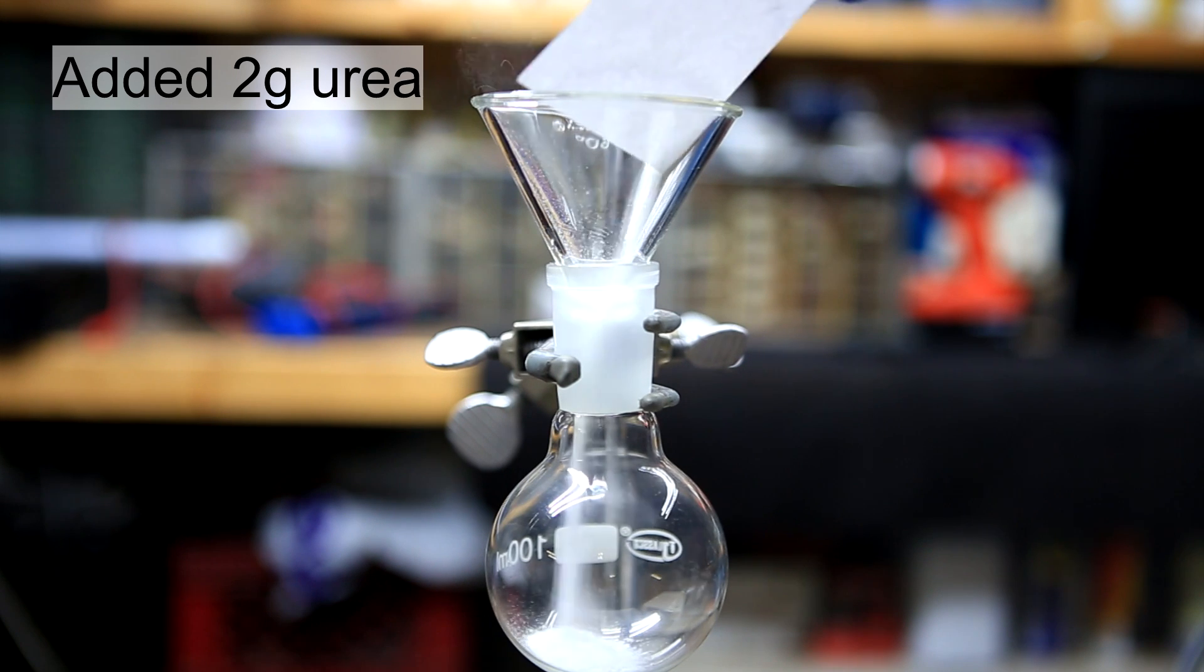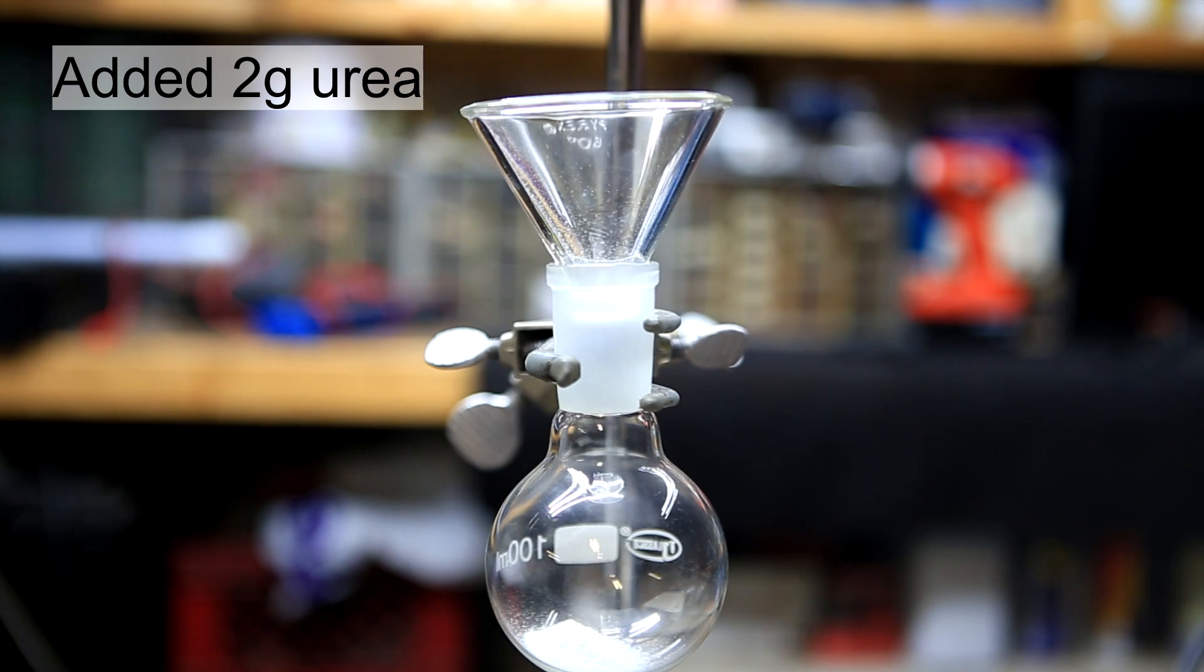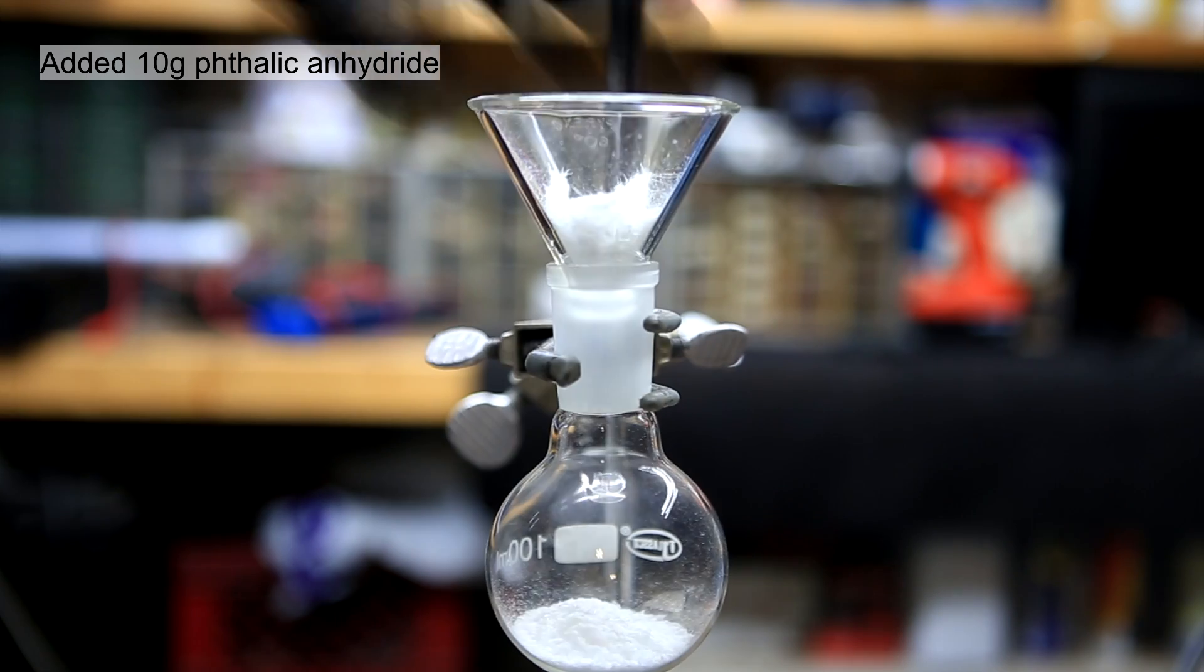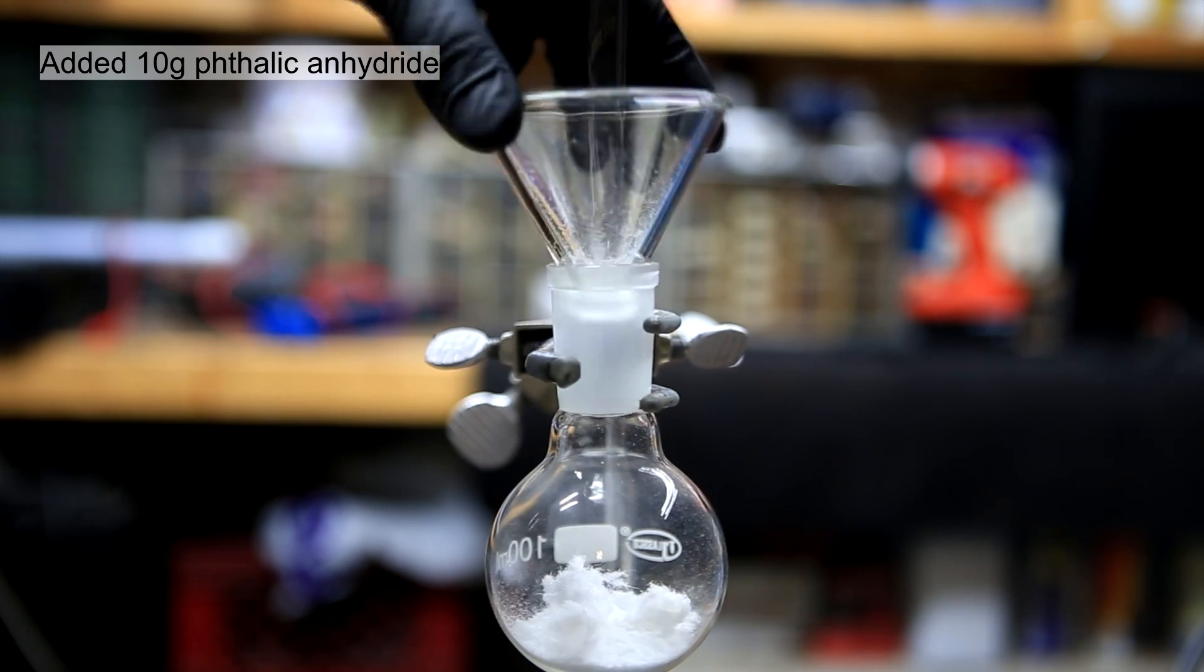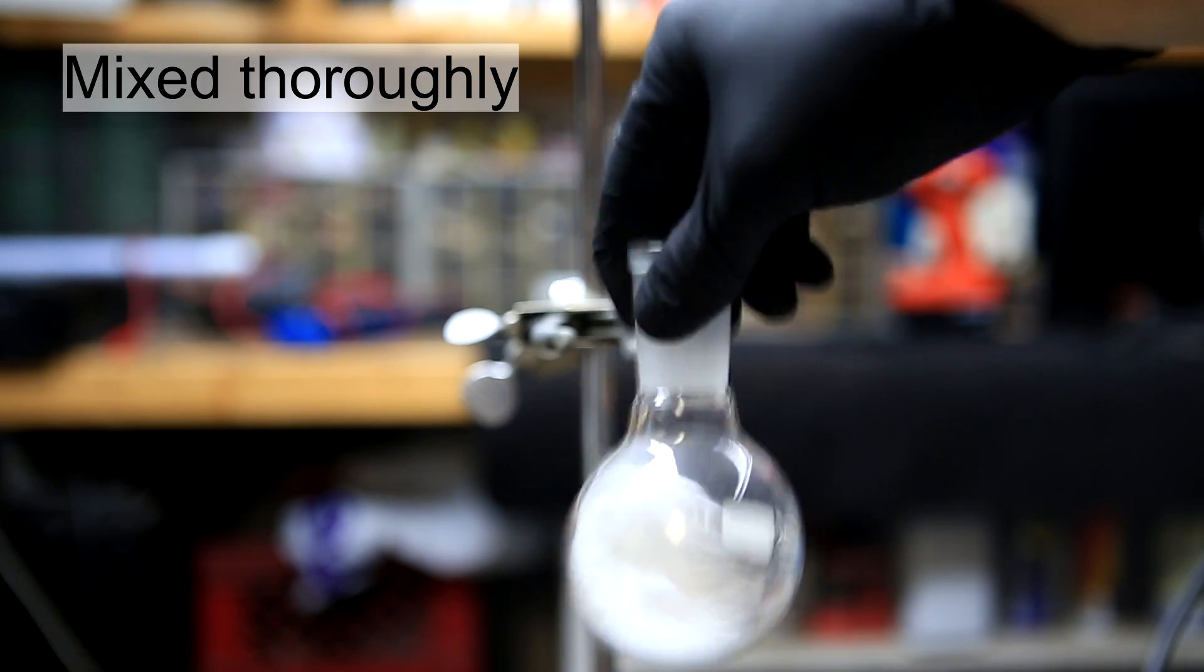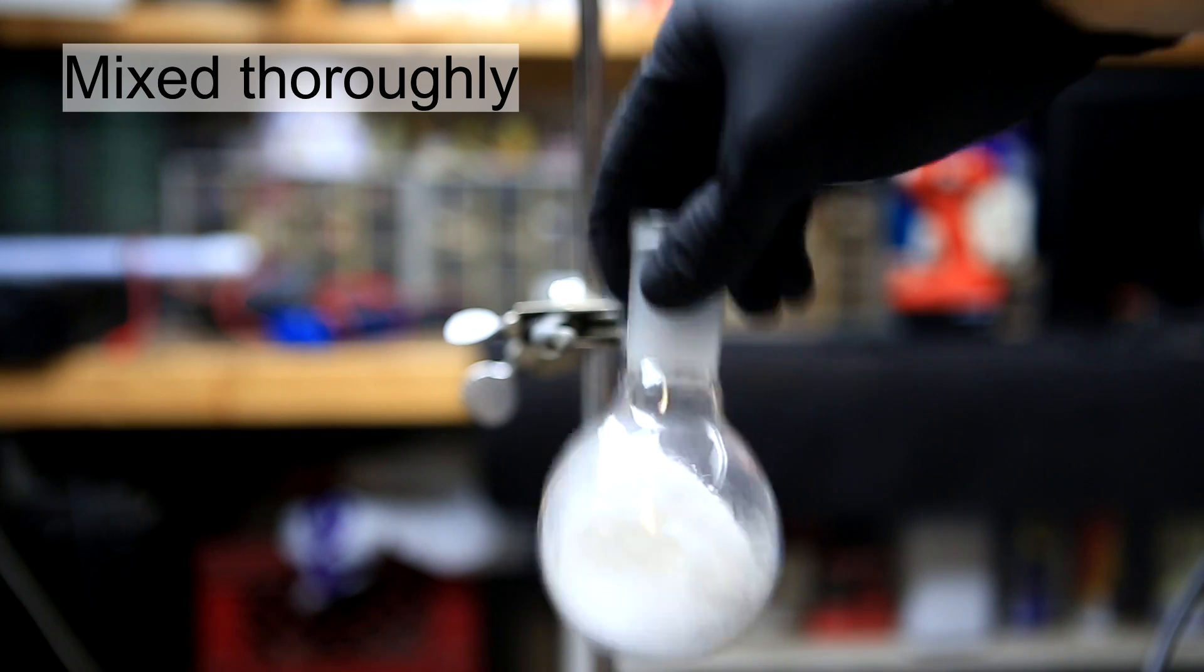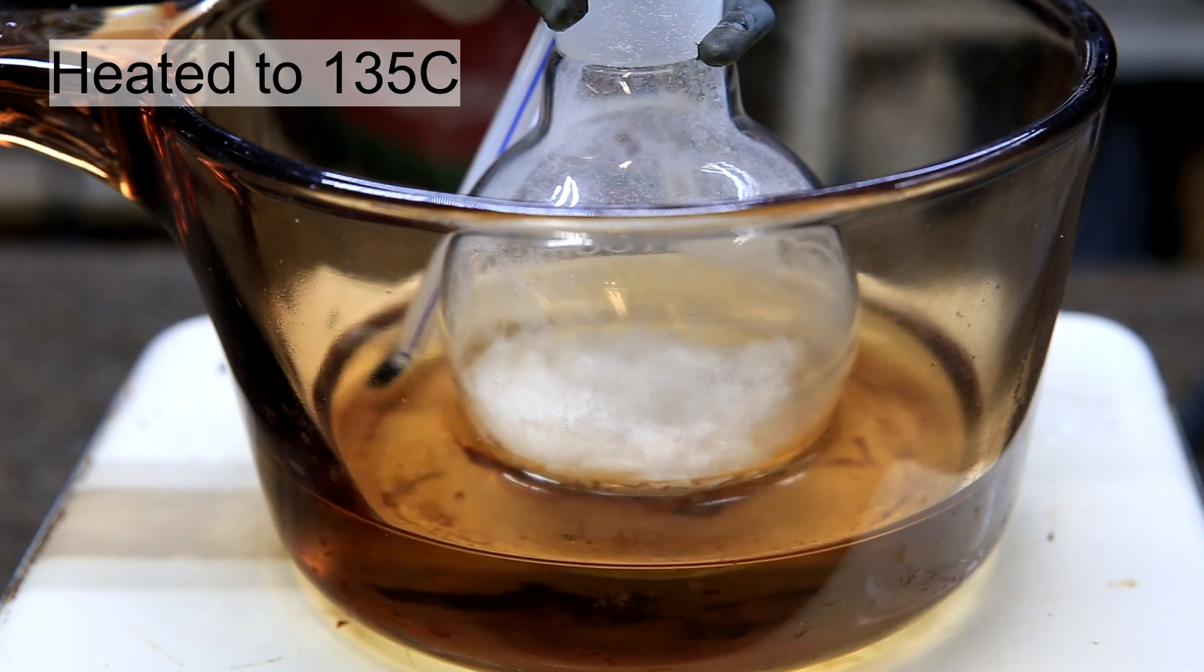2 grams of urea is added to a round bottom flask. This is followed by an addition of 10 grams of phthalic anhydride. The flask is then shaken to mix up the chemicals as much as possible. The mixture is then placed on an oil bath and heated until 135 degrees Celsius.